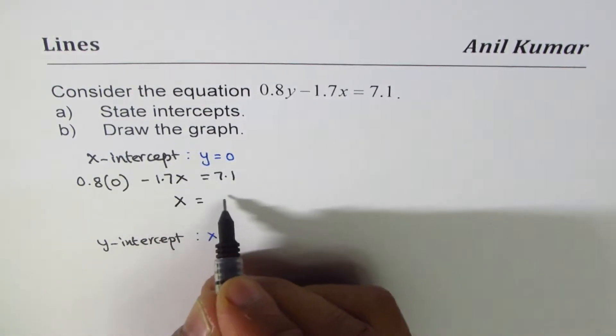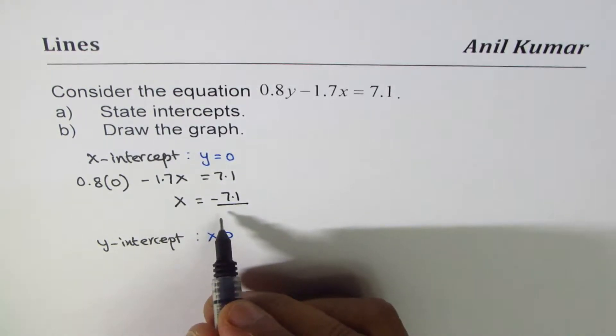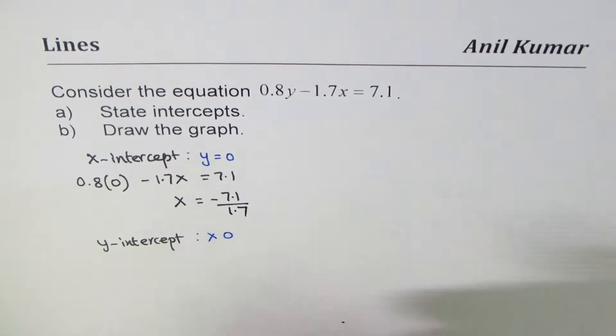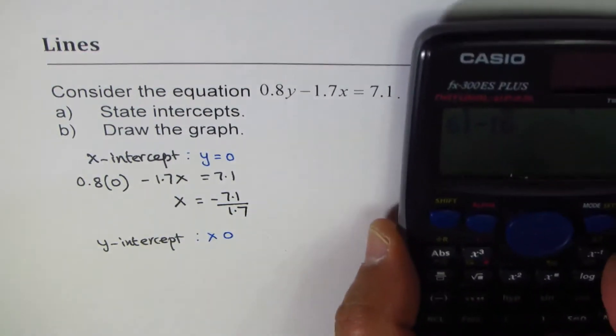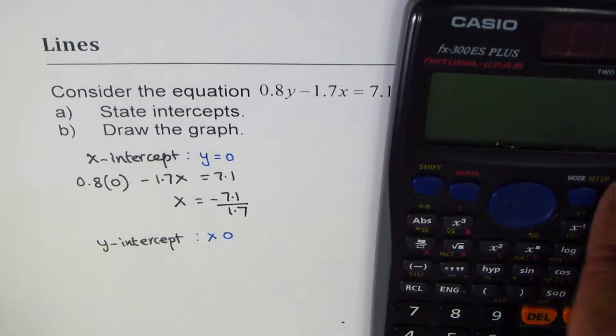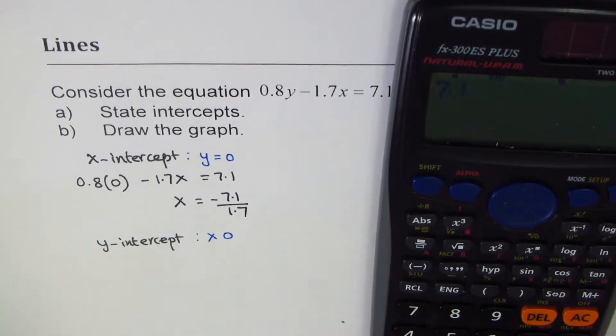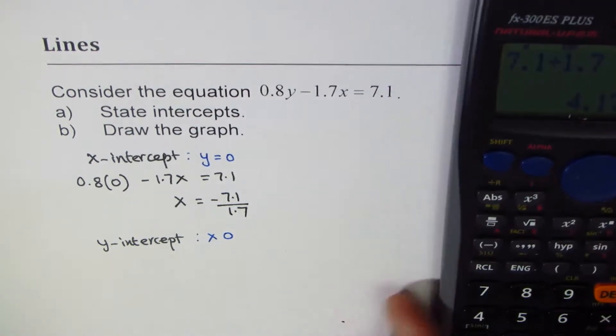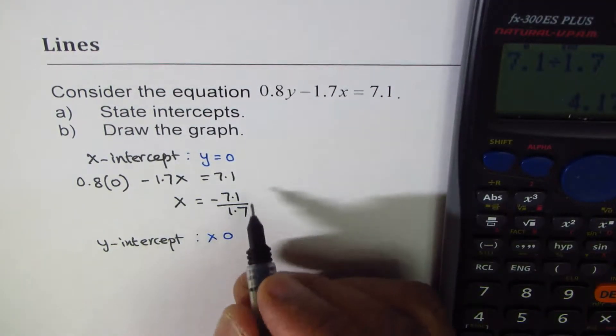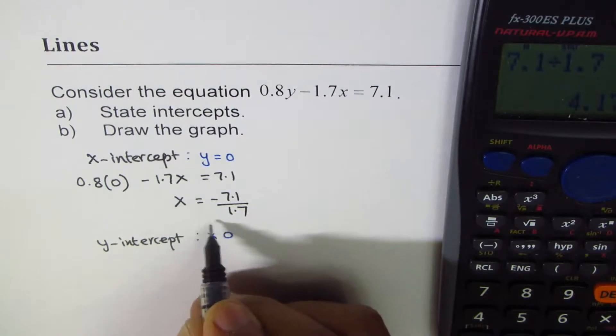Let's use the calculator to calculate this value: 7.1 divided by 1.7, and that gives you 4.176. So this value is 4.176.